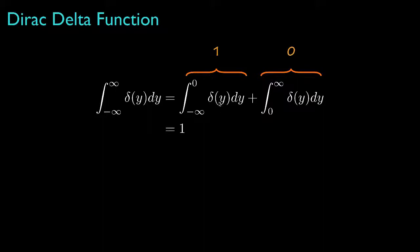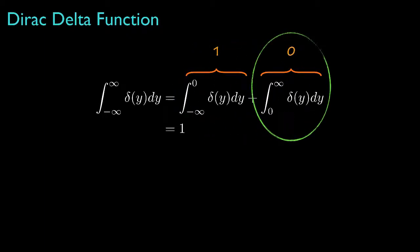For our purposes — that is, to use the Dirac delta function in probability theory — we will adopt the convention where the left tail integral from negative infinity to 0 is equal to 1 and the integral from 0 to infinity is equal to 0. This definition reveals one of the most important things to keep in mind about this generalized function: all of our definitions are in terms of what the function does inside of an integral, not in terms of what it is. We define this function in terms of how it behaves inside of integrals.